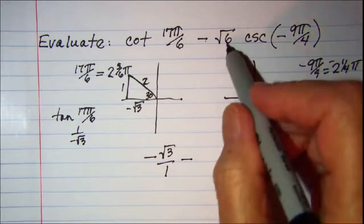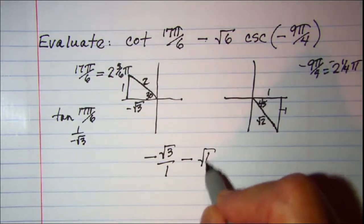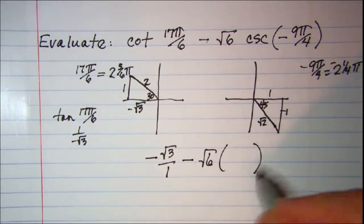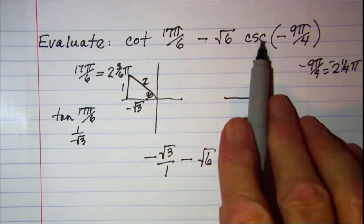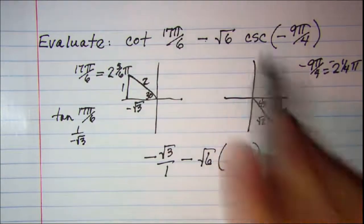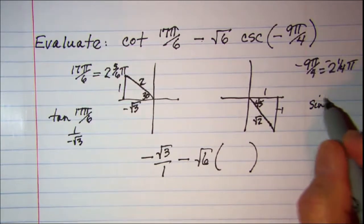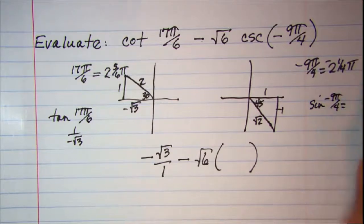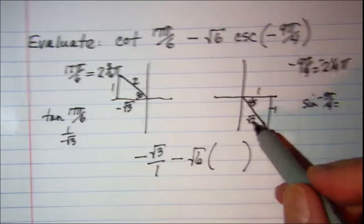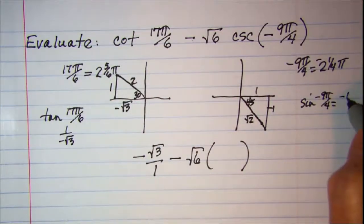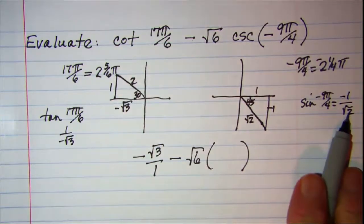Minus square root of 6 times... Now on this one cosecant is the reciprocal of sine. So my sine is opposite over hypotenuse. So negative 1 over root 2. The reciprocal of that is negative root 2 over 1.